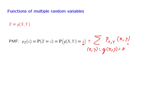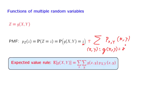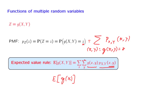Similarly to the case of a single random variable and a function of it, we can now talk about expected values of functions of two random variables. There is an expected value rule that parallels the one developed for the single-variable case. The form is natural: with a given probability a specific (x, y) pair occurs, and when it occurs the random variable takes a certain value; combining these gives a contribution to the expected value. We sum over all possible (x, y) pairs that may occur.